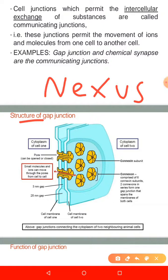The gap junction is made up of a protein called connexin, also called connexons. Connexin comprises of six connexin subunits. Two connexons in series form one gap junction that spans the membrane of both cells. So the prominent protein on the gap junctions are connexons.